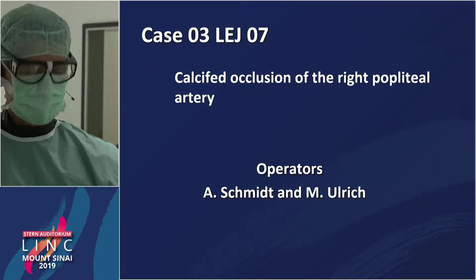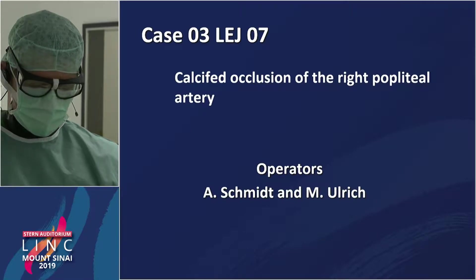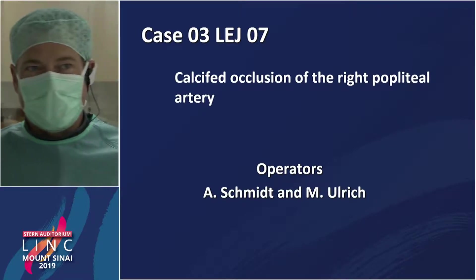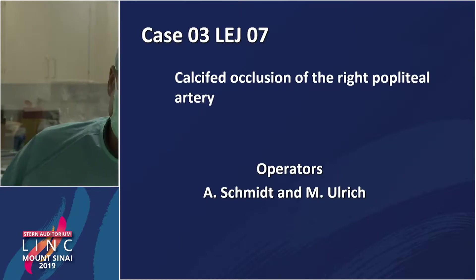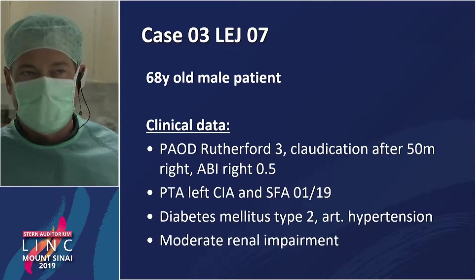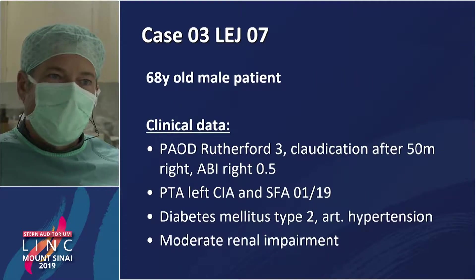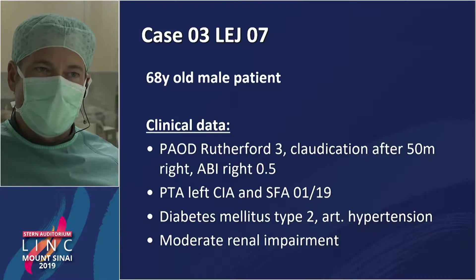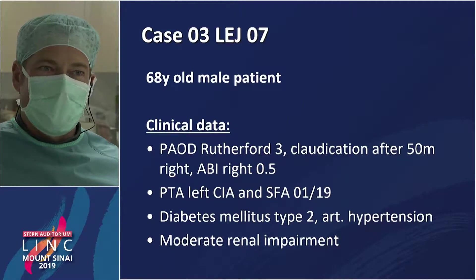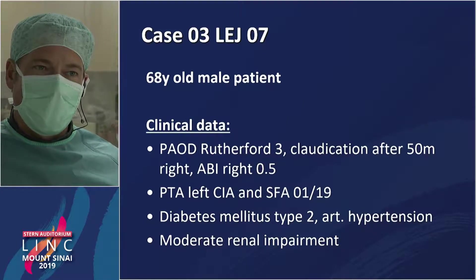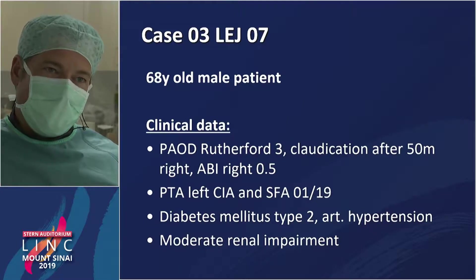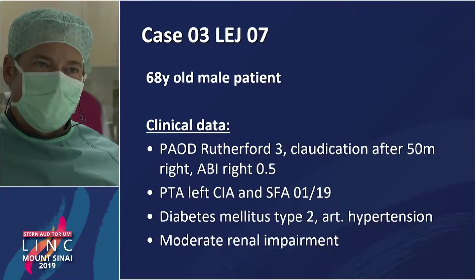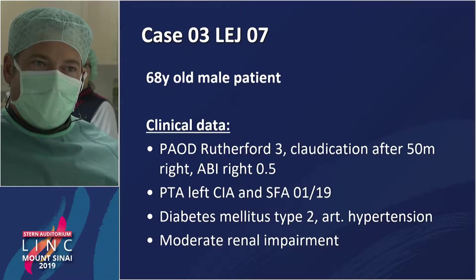We'll start with the case right away — a calcified occlusion of the popliteal artery. The clinical data: PAOD Rutherford 3, claudication at 50 meters. Right side ABI is 0.5, with prior intervention of the left common iliac artery.